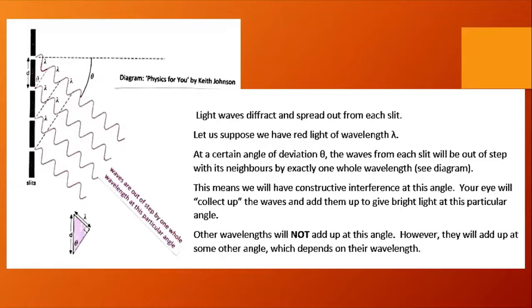Now from the diagram here we can see d on the left hand side which is indeed the grating spacing, the distance between adjacent slits. We see light waves diffracting and spreading out from each slit, and let's suppose we have red light of a particular wavelength lambda. At a certain angle of deviation theta, the waves from each slit will be out of step with its neighbor by exactly one whole wavelength. And that's what we've tried to show in the diagram here. This means that at this particular angle we will have constructive interference. Your eye will then collect up the waves and add them up to give a bright line, bright red light, at this particular angle. Other wavelengths will not add up at this angle. However, they will add up at some other angle which again depends on their wavelength.